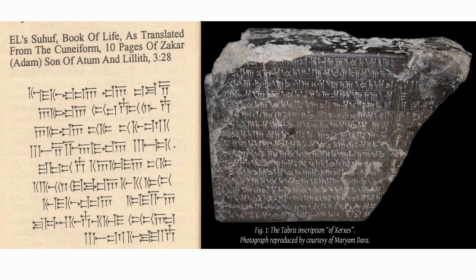Cuneiform isn't all the same because, as we went through time, the language changed with different tones. On the left, this is what Adam — or Zakar, more correctly — wrote. These are different forms of cuneiform. If you pay attention closely, these symbols look the same because they're wedge-shaped, but they're different. Some are crossed over, some are slanted. Cuneiform had different forms — it morphed over time.